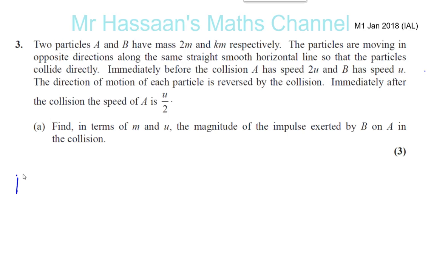Let's start off with looking at the situation before the collision takes place and after the collision takes place. So before the collision, this is what we see. We have particle A and particle B. Now, it says A has mass 2m. So the mass of A is 2m.